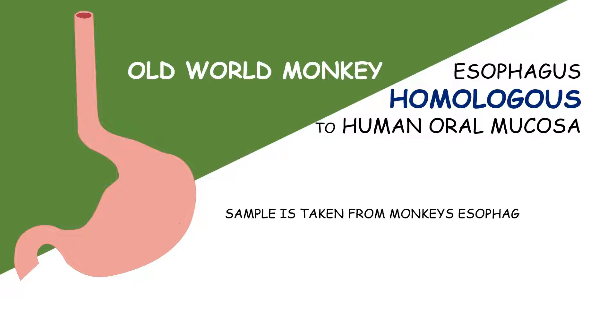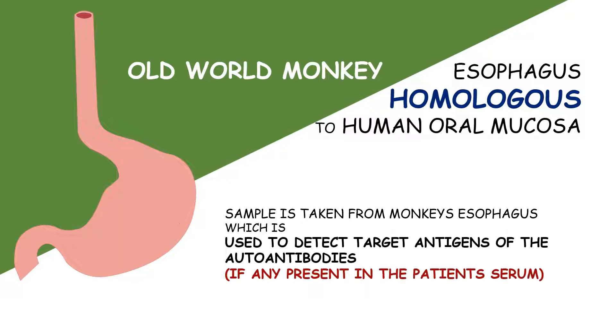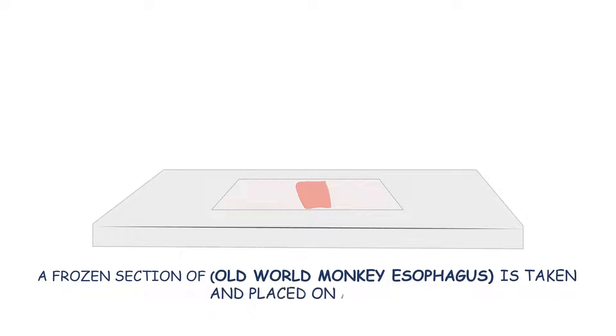A sample is taken from monkey's esophagus which is used to detect target antigens of the autoantibodies if any present in patient's serum. A frozen section of monkey's esophagus is taken and placed on a slide.